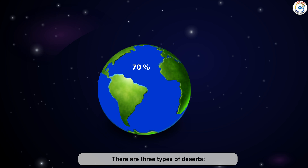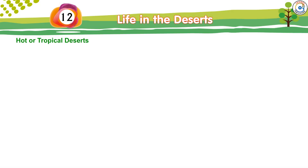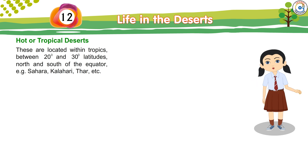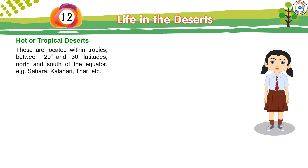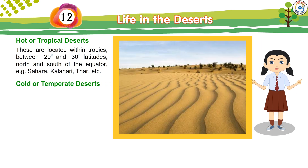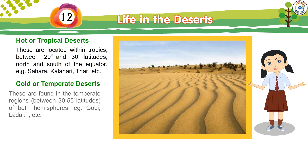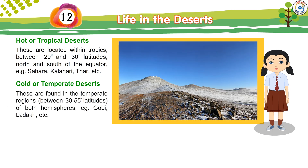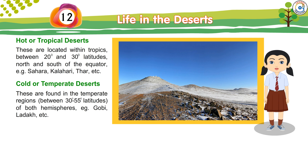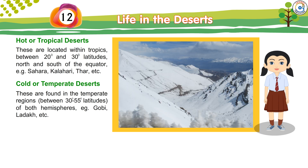There are three types of deserts. Hot or Tropical Deserts are located within the tropics, between 20 degrees and 30 degrees latitude north and south of the equator — for example, Sahara, Kalahari, and Thar. Cold or Temperate Deserts are found in the temperate regions between 30 to 55 degrees latitudes of both hemispheres — for example, Gobi and Ladakh.